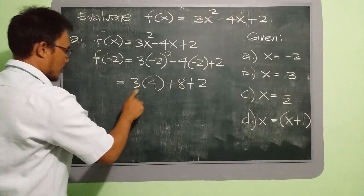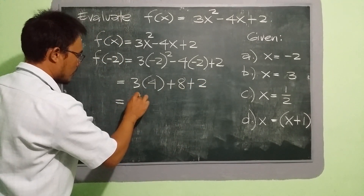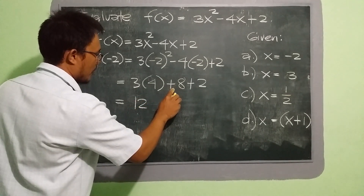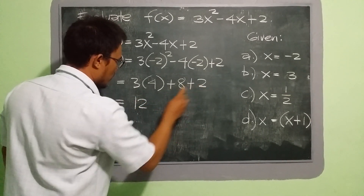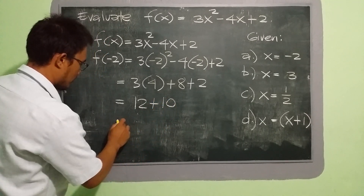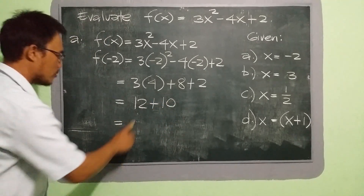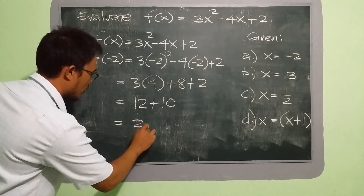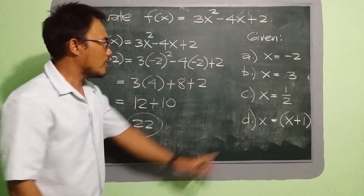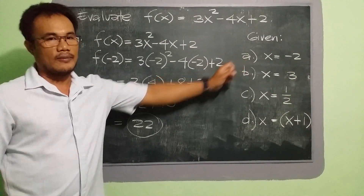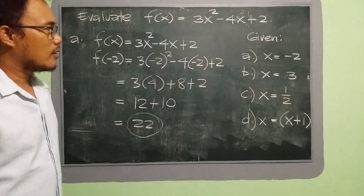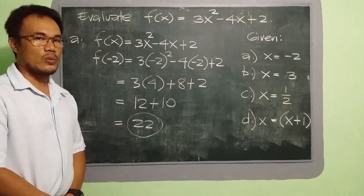So we have 3 times 4, that is 12. Plus positive 8, positive 2, that is plus 10. So that is equal to 12 plus 10, which is 22. So that is our answer for letter a, where the given value of x is negative 2.